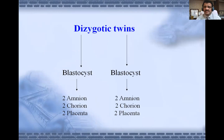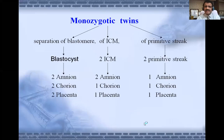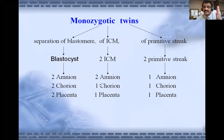Dizygotic means two separate zygotes: two separate ova fertilized by separate spermatozoa. These two zygotes develop into blastocysts separately, each with their own amnion, chorion, and placenta — so two chorions, two amnions, two placentas. In monozygotic twins, separation can occur at the level of the blastomere, ICM, or primitive streak. At blastomere level: two amnions, two chorions, two placentas. At ICM level: two amnions, one chorion, one placenta. At primitive streak level: one amnion, one chorion, one placenta.